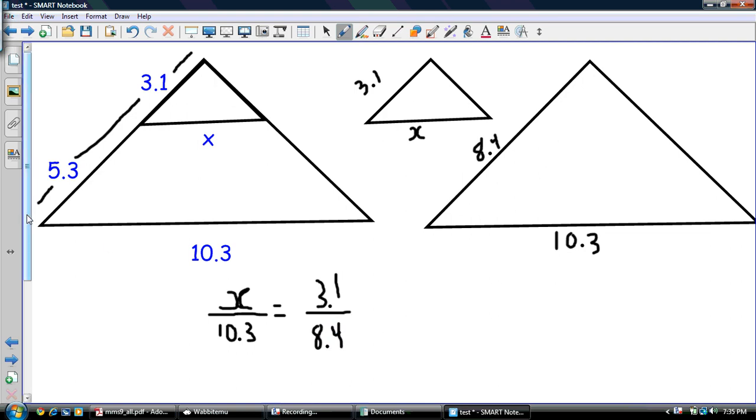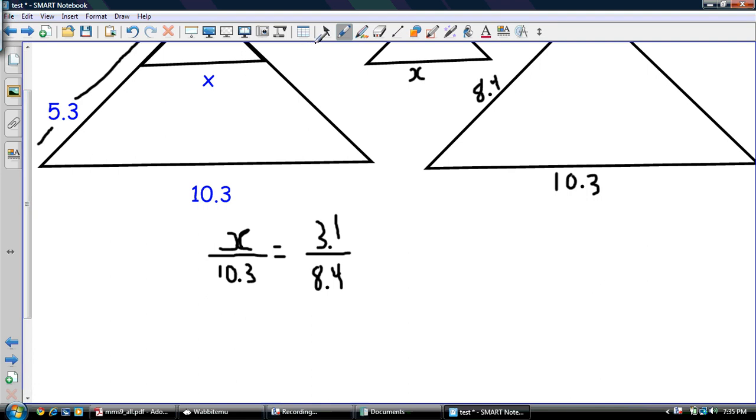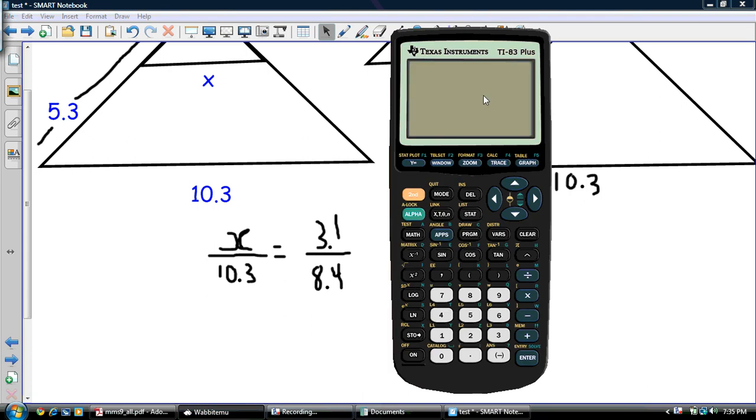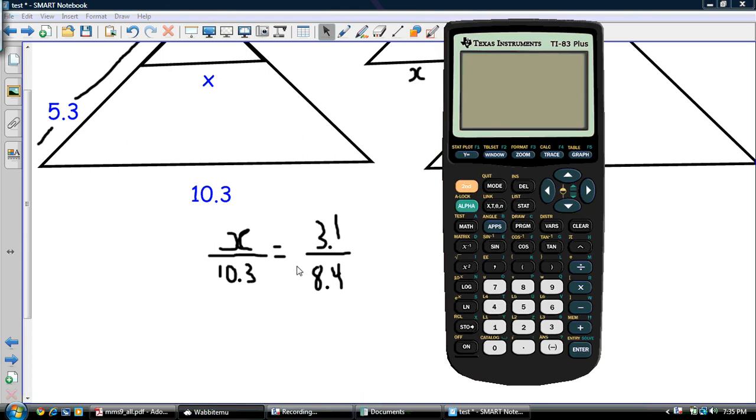So now we're back to solving this equation here of solving it for X, solving our ratios here, our equation. So I'll break up my calculator. The first thing we're going to do is we're going to try to calculate this answer right here. So we go 3.1 divided by 8.4, and that equals another gnarly decimal.